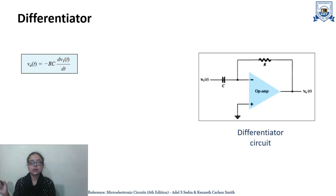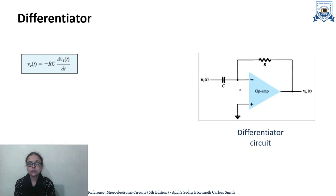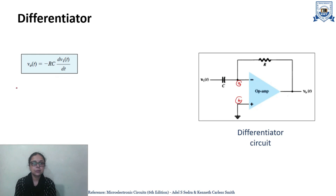To analyze this circuit, the first step is to apply the concept of virtual ground. If this is node A and this is node B, since node B is at ground potential, node A will also be at ground potential — meaning VA equals 0, by the concept of virtual ground.